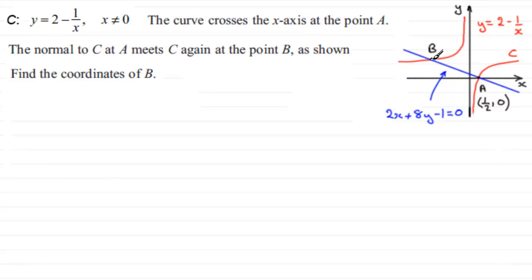Well when you want to find out where any two curves intersect we need to do simultaneous equations. So we'll have a look then at saying at B. At B we've got our two equations. Let's just write them down. The equation of the normal, 2x plus 8y minus 1 equals 0. And we've got the equation of the curve which is y equals 2 minus 1 over x. And if we're doing simultaneous equations, good idea to number these equations. Call it 1 and 2.